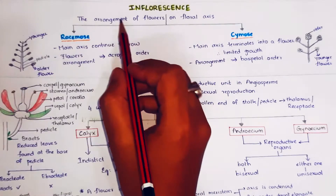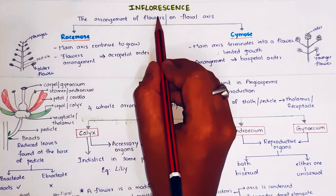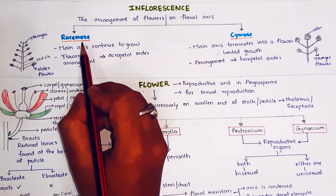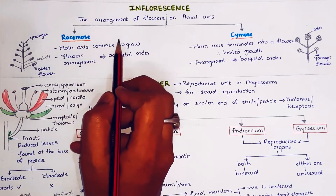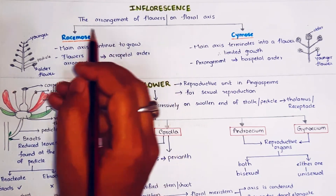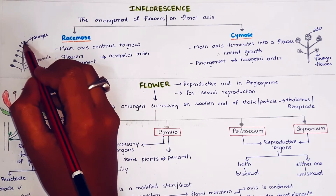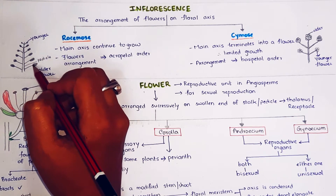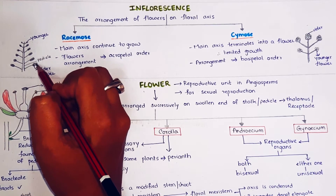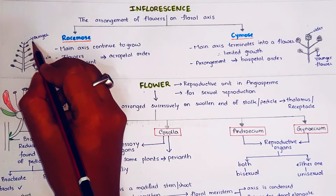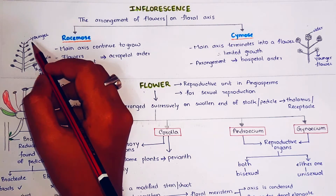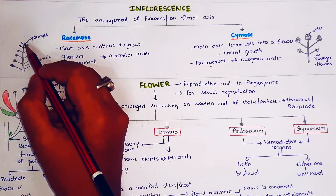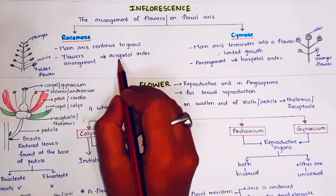What is inflorescence? Inflorescence is an arrangement of flowers on the floral axis. It is of two types: racimose and cymose. In racimose, the main axis continues to grow and does not terminate in a flower. As it continues to grow, it forms flowers. The oldest flowers are at the base of the peduncle, and the newly formed younger flowers are at the apex. This type of arrangement, where older flowers are at the base and younger flowers are at the apex, is called acropetal order.